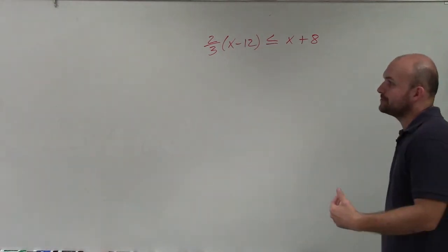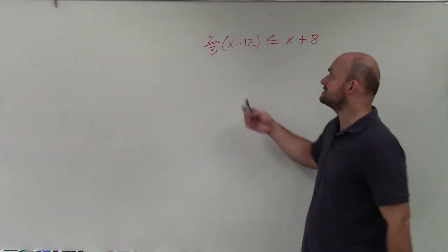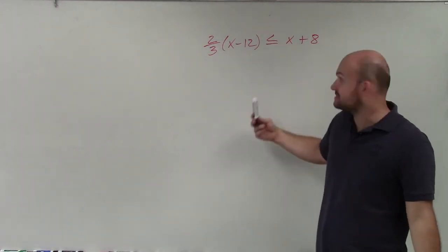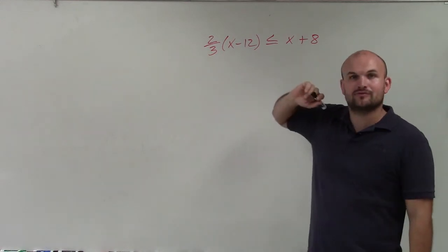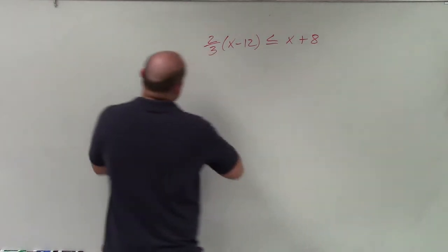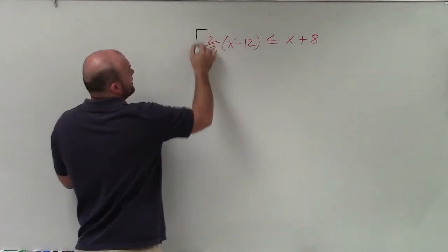So what we need to do is, before we get rid of the fractions, let's go ahead and get rid of the parentheses. Actually, you know what? Let's actually get rid of the fractions first. So to do that, I'm going to multiply everything by 3.